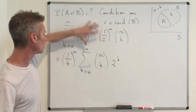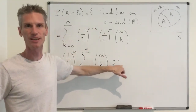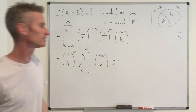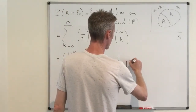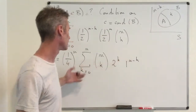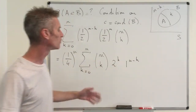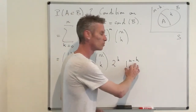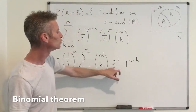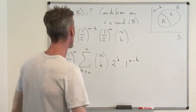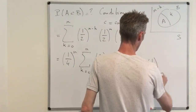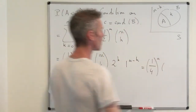This sum is of the form sum for k equals 0 to n of n-choose-k times a^k times b^(n minus k). Here a equals 2 and b equals 1, since one to the power n minus k is just 1. By the binomial theorem, this whole sum equals (2 plus 1)^n, which is 3^n. So we get (1/4)^n times 3^n.